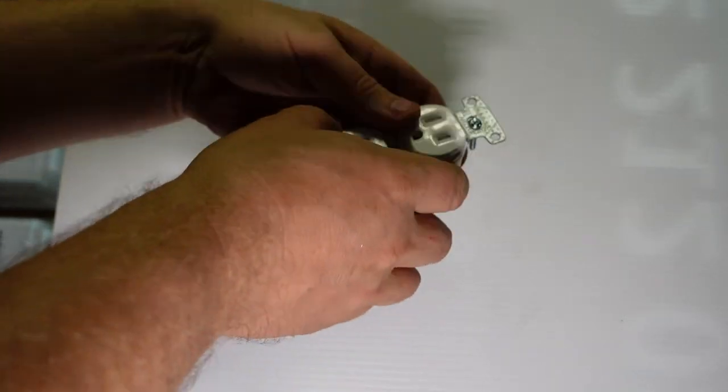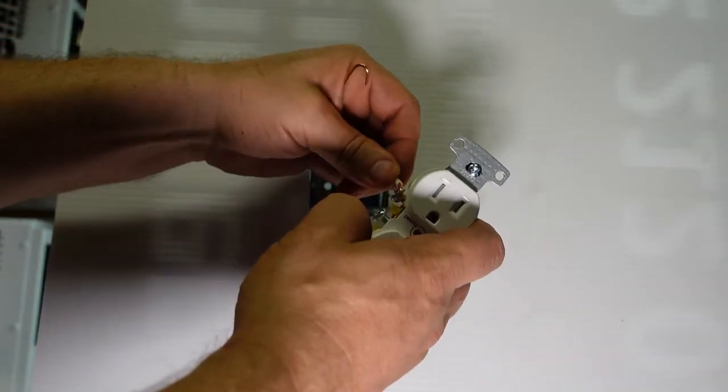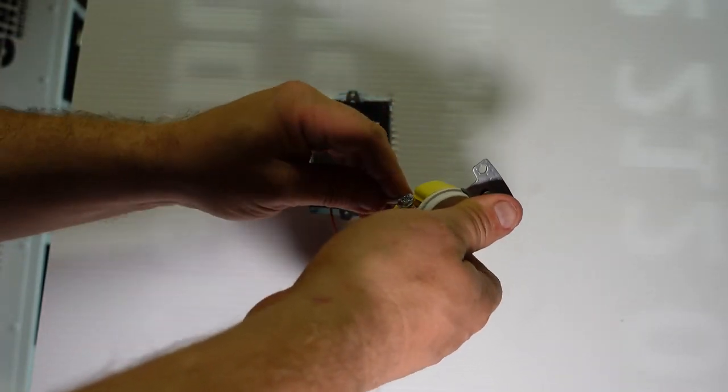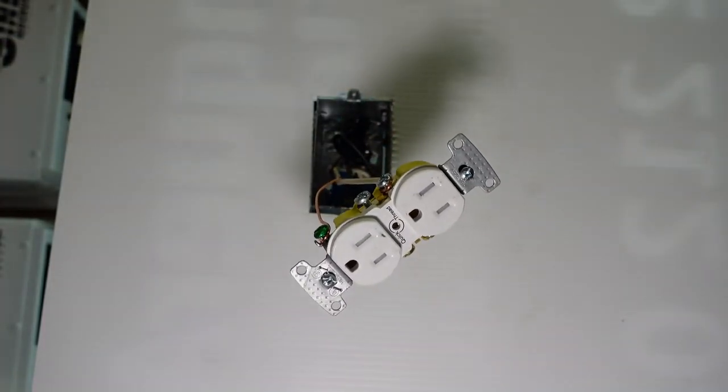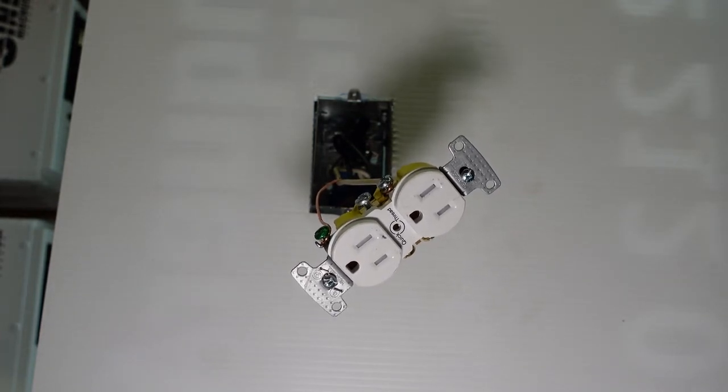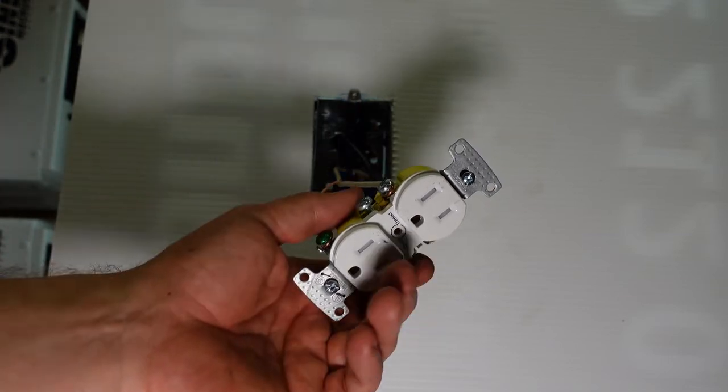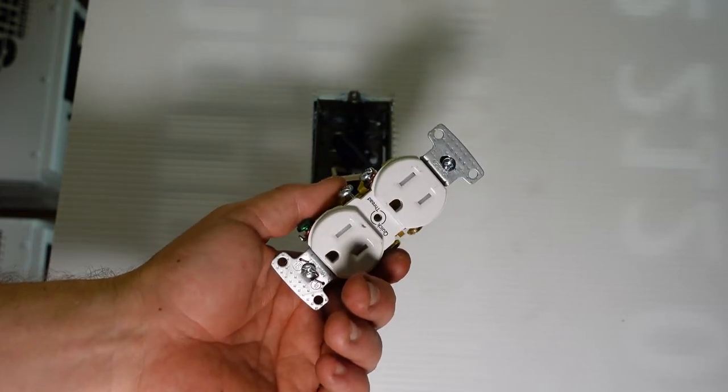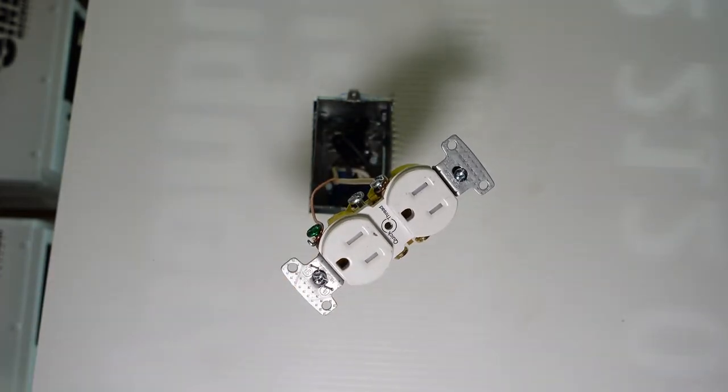So the black is going to go on our gold. Our white is going to go on our silver. And our bare copper is going to go on our green. And that's it. Then we basically have a nice long receptacle. We'll tighten those down. Stick it in the wall. And Bob's your uncle. Or Fred's your nephew. Or whatever you want to call it.